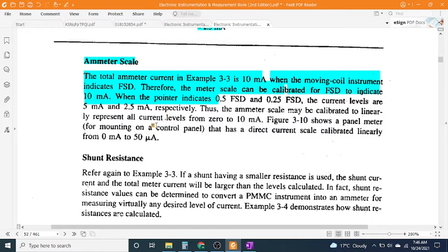When the pointer indicates 0.5 FSD and 0.25 FSD, the current levels are 5 mA and 2.5 mA respectively. Thus, the ammeter scale may be calibrated to linearly represent all current levels from 0 to 10 mA.